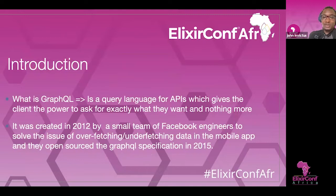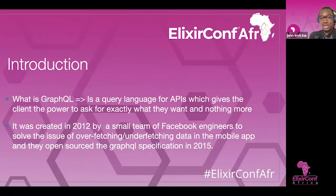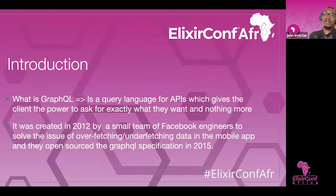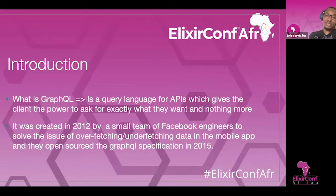So, what is GraphQL? GraphQL is a query language for APIs which gives the client the power to ask for exactly what they want and nothing more. Don't confuse it with graph databases — it's not a graph database. Most people, when I talk about GraphQL, think it's in line with Neo4j. It has matured enough to be used by some databases as the sole query language, like Biggraph — you don't need to learn any specific query language; you can just use GraphQL.